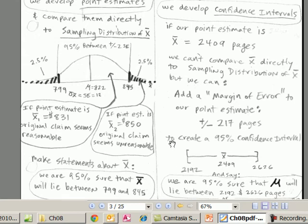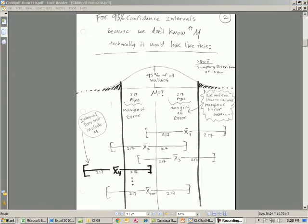You might even see in the ad or on the back of the book or the manual that comes with the printer cartridge, it would say something like 2,400 pages with a margin of error of 200 pages. The statements we can make in chapter 8, we are 95% sure that mu will lie between the two limits. Back in chapter 7, we were comparing X bar.